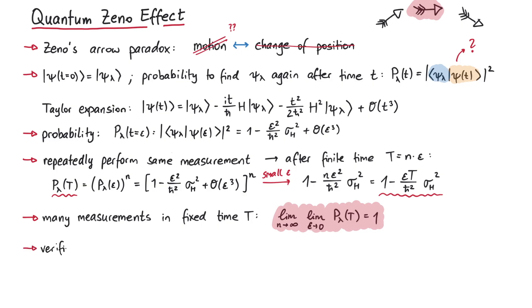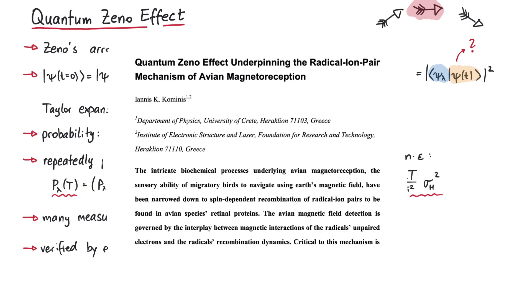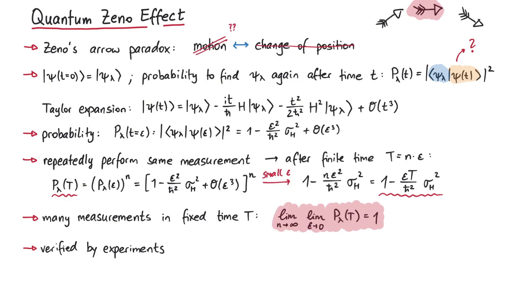By the way, the quantum Zeno effect has been verified by experiments many times, and one paper even suggests that the quantum Zeno effect is a key mechanism in the magnetoreception of birds, which enables them to see magnetic fields. But that's pretty much it for this video. Thanks for watching!